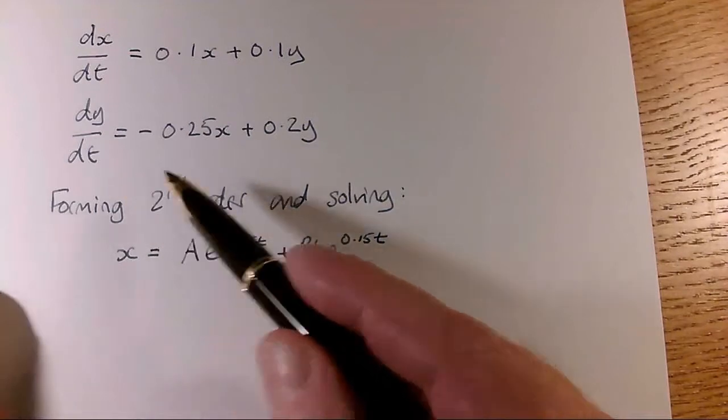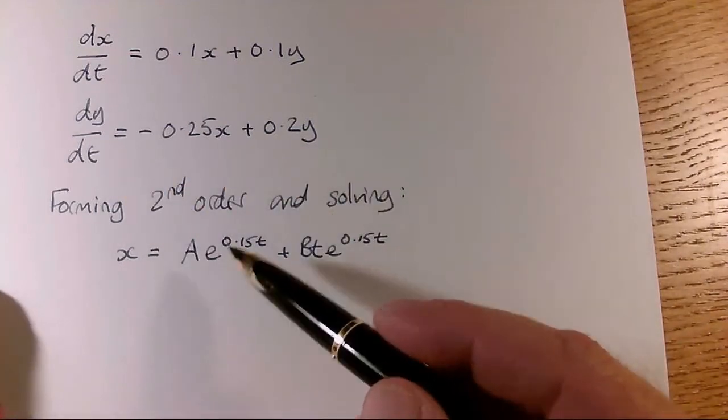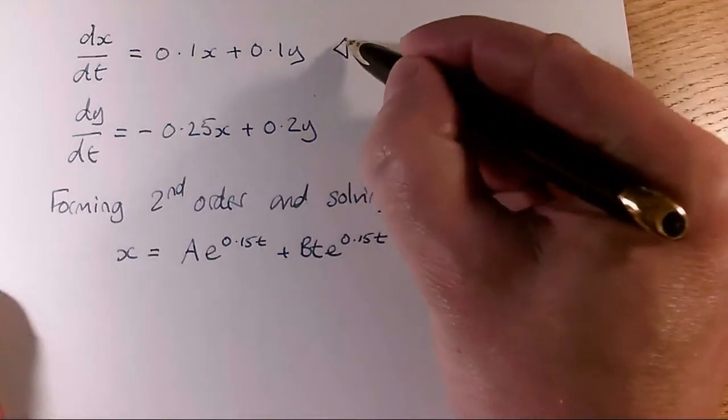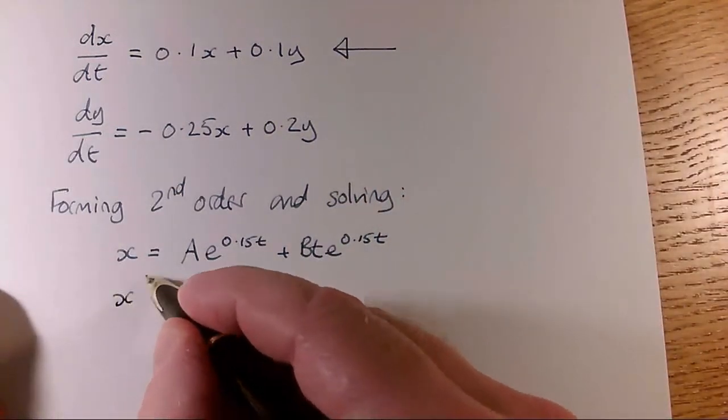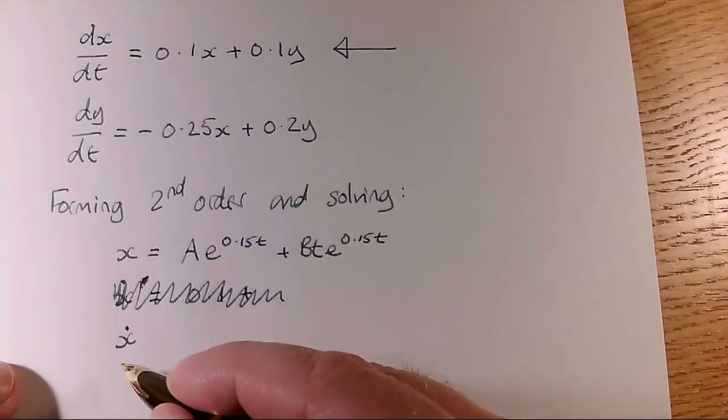This dy by dt equation is a differential equation. Why use that to find y, when I can use this top one to find y? All I've got to do is find dx by dt. dx by dt is called x dot, not x dashed.